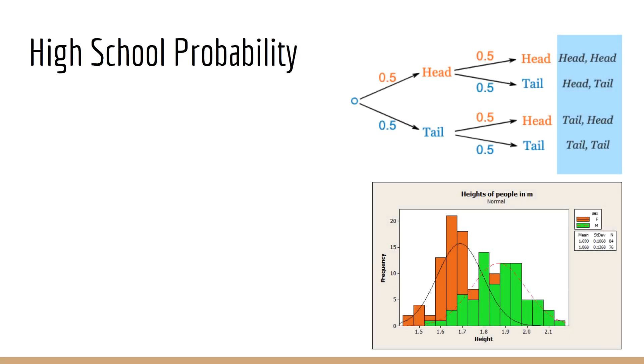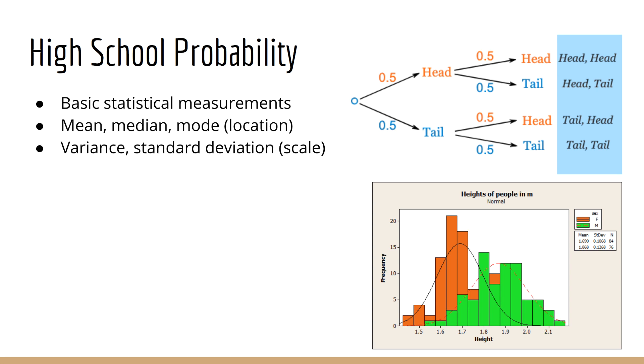First we have high school probability. What do you learn here? In high school probability, you'll learn about basic statistical measurements such as the mean, median, and mode. As you know, these are used to describe the location of a random variable. You'll also learn about measurements such as the variance and the standard deviation. These tell us the scale of a random variable. So you might do simple experiments, like measure all the heights of the students in your classroom, and calculate the mean and variance.